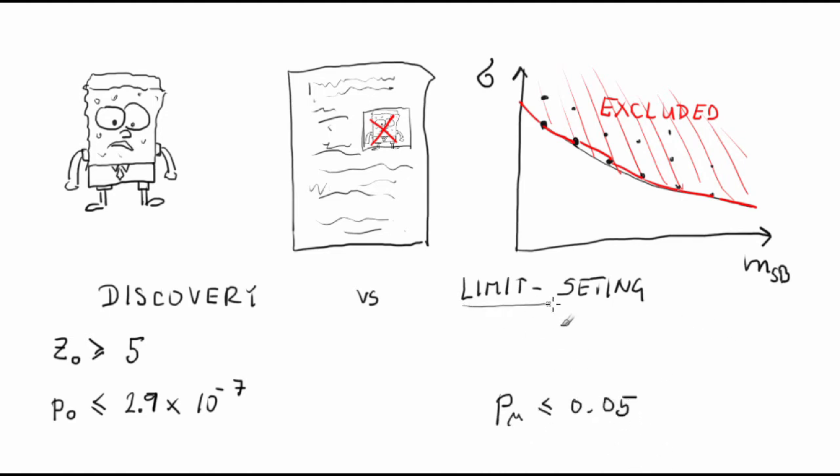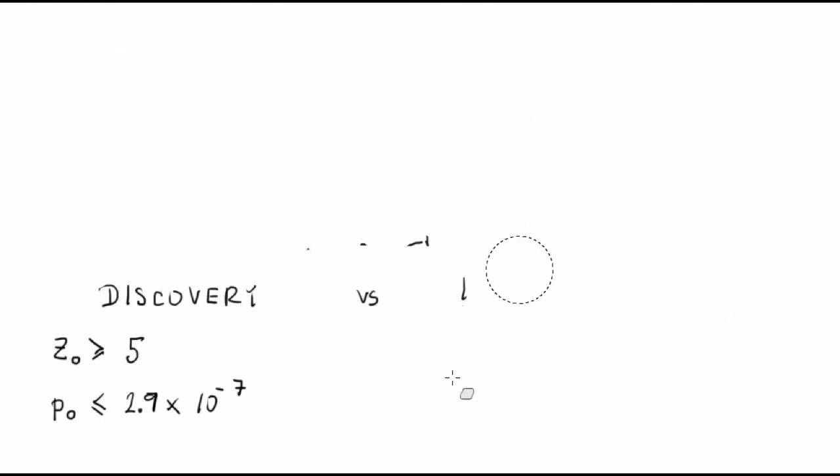In one of the previous videos, we defined the test statistic T sub mu vector. T sub mu vector is equal to minus 2 logarithm of L of mu vector theta vector head head of mu vector over L of mu vector head theta vector head.